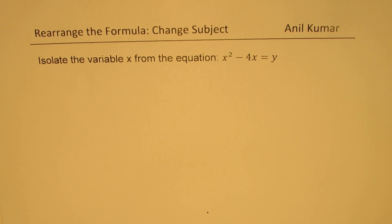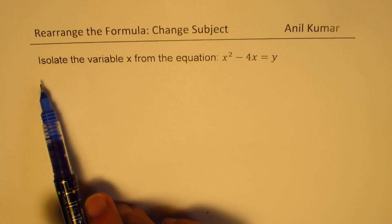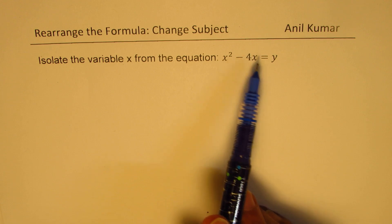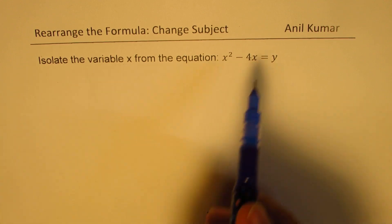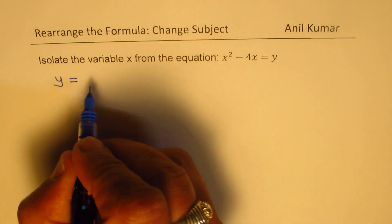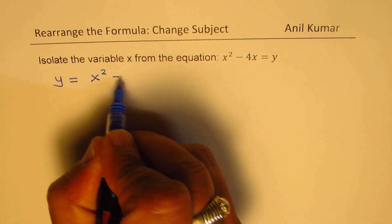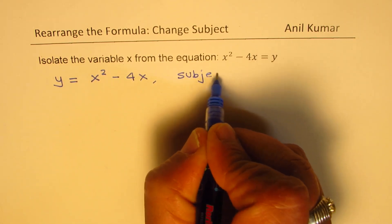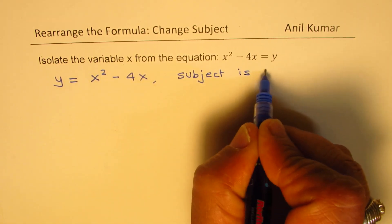The equation can also be put forward as isolate the variable x from the equation x squared minus 4x equals to y. In this equation, we have written y equals to x squared minus 4x, and so we have the subject as y.